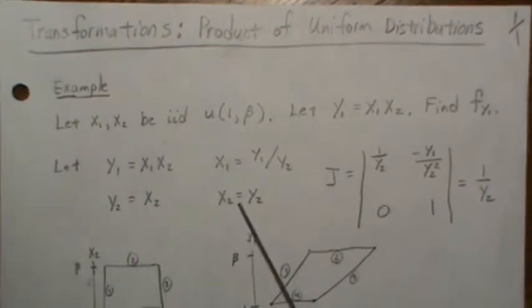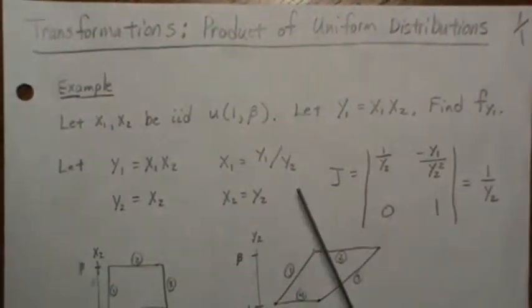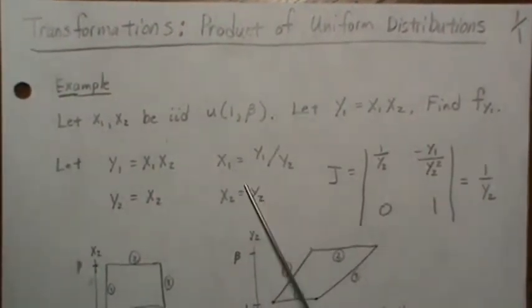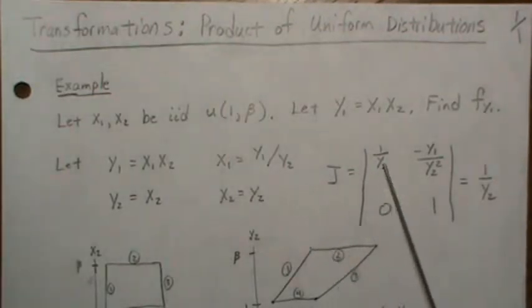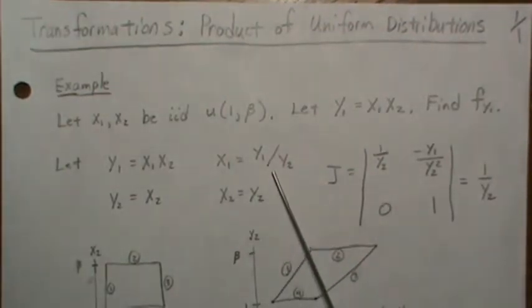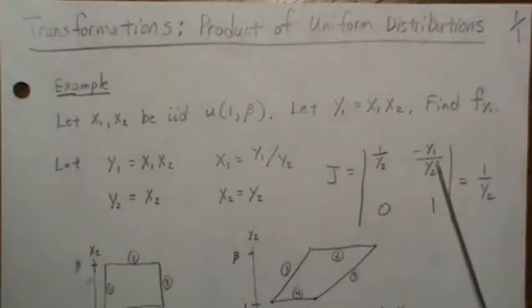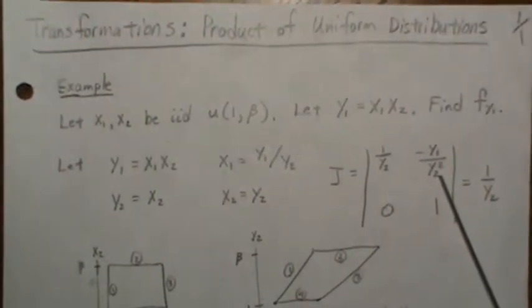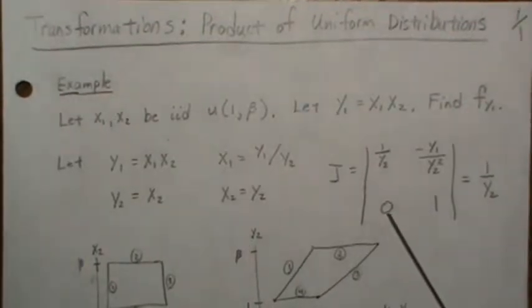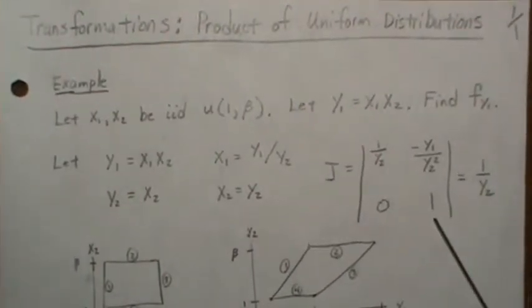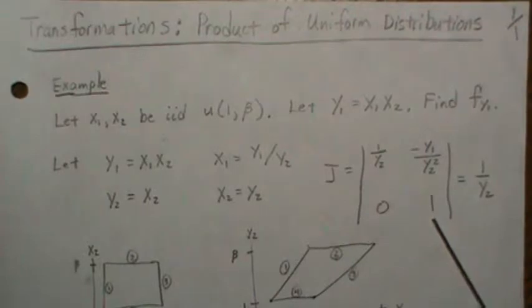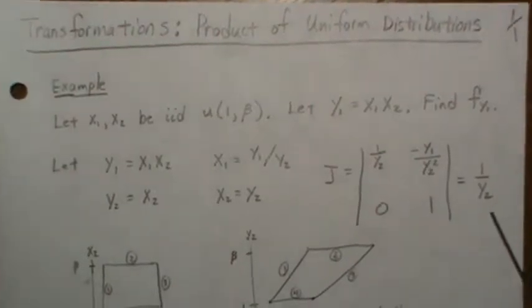When we back solve for x1 and x2, we get this. Then the Jacobian of this transformation is the derivative of x1 with respect to y1, which is this, then the derivative with respect to y2. This is the derivative of x2 with respect to y1, and this is the derivative of x2 with respect to y2. We take the determinant and get 1 over y2 squared.